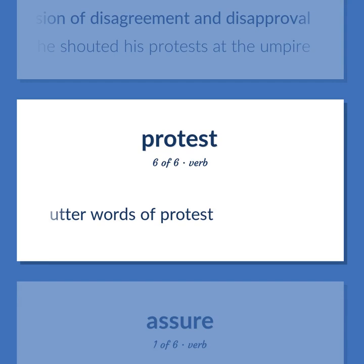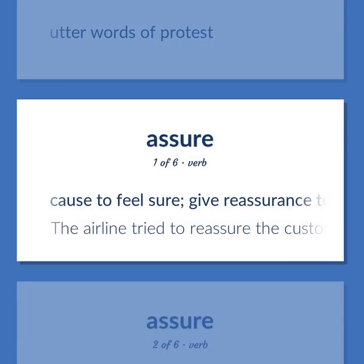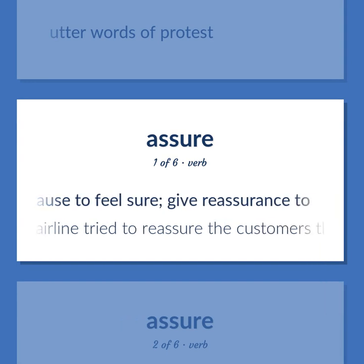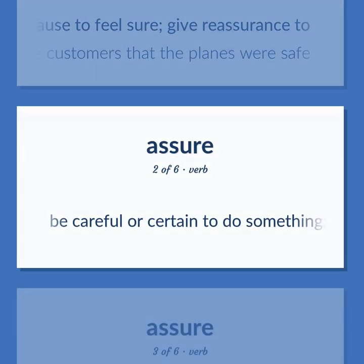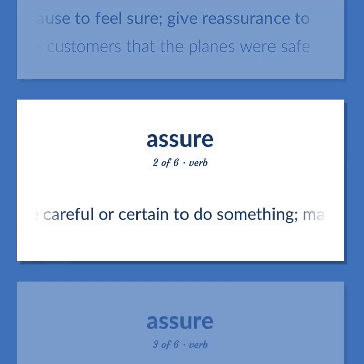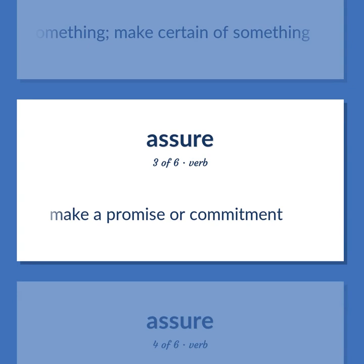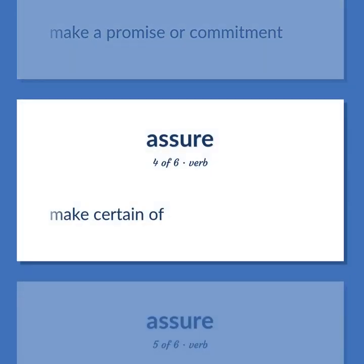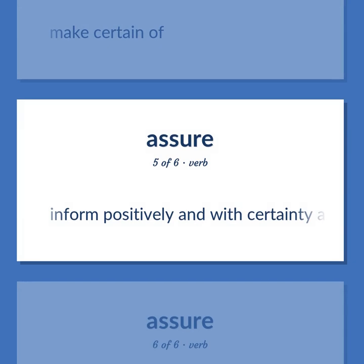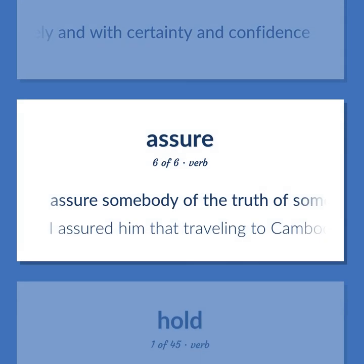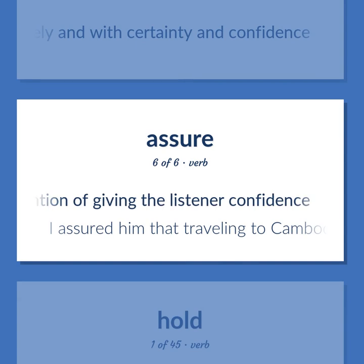PROTEST/ASSURE: Utter words of protest. ASSURE: Cause to feel sure; give reassurance to — the airline tried to reassure the customers that the planes were safe. Be careful or certain to do something; make certain of something. Make a promise or commitment. Make certain of. Inform positively and with certainty and confidence. Assure somebody of the truth of something with the intention of giving the listener confidence — I assured him that traveling to Cambodia was safe.